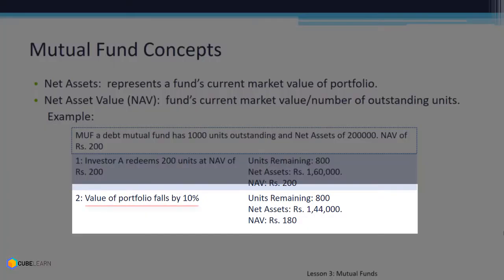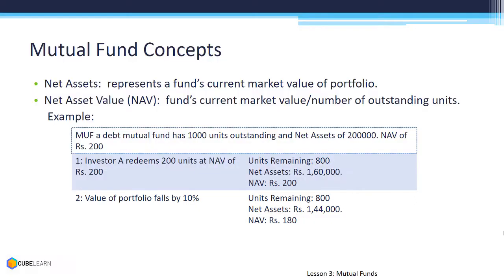Now, if the portfolio falls by 10% because of the market situation, net assets will get reduced by 10% to Rs. 1,44,000 from Rs. 1,60,000, and the NAV will become Rs. 180.